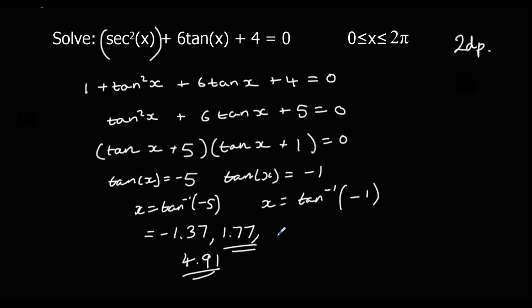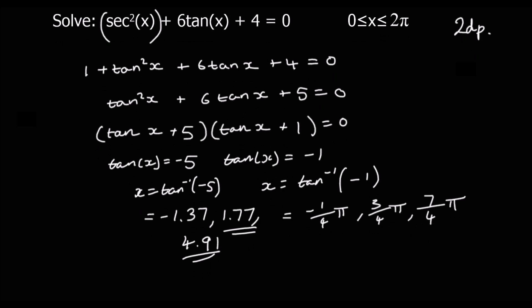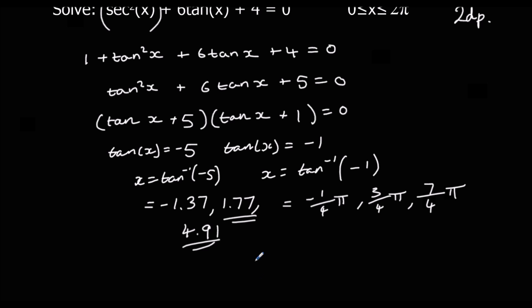Shift tan of −1 gives −¼π. Add π to get the next one: ¾π. And adding another π: 7/4 π. So between 0 and 2π we have 1.77, ¾π, 4.91, and 7/4 π.